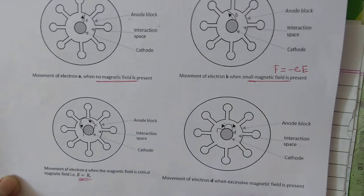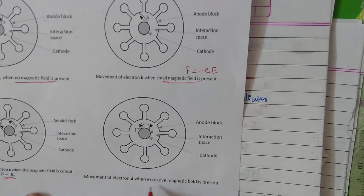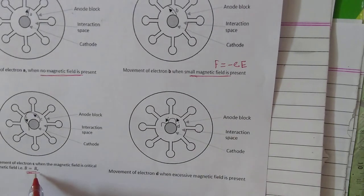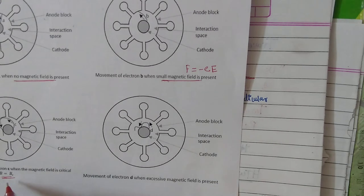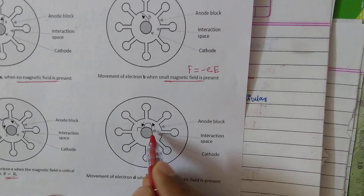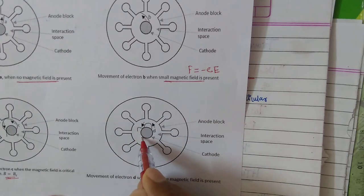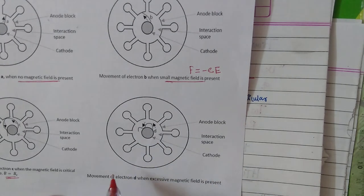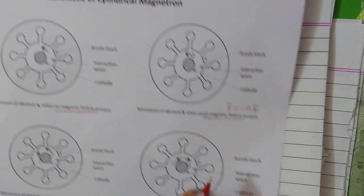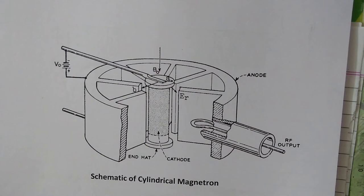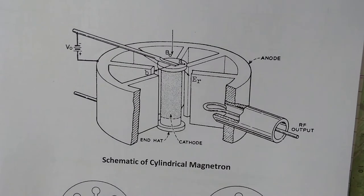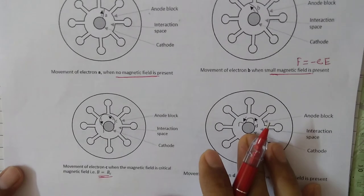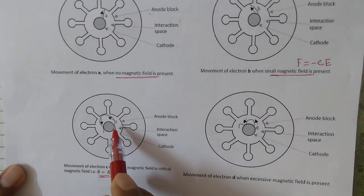If you further increase the magnetic field beyond a specific value called the cutoff magnetic field or Hull cutoff magnetic field — the derivation for which we will derive in our upcoming video — electrons will just move in the space between cathode and anode and never reach the anode. This phenomenon results in very high efficiency for magnetron oscillators. We have discussed the constructional details, electron movement, and how the crossed fields change the electron path, as well as the critical magnetic field at which electrons just graze the anode and return to the cathode.